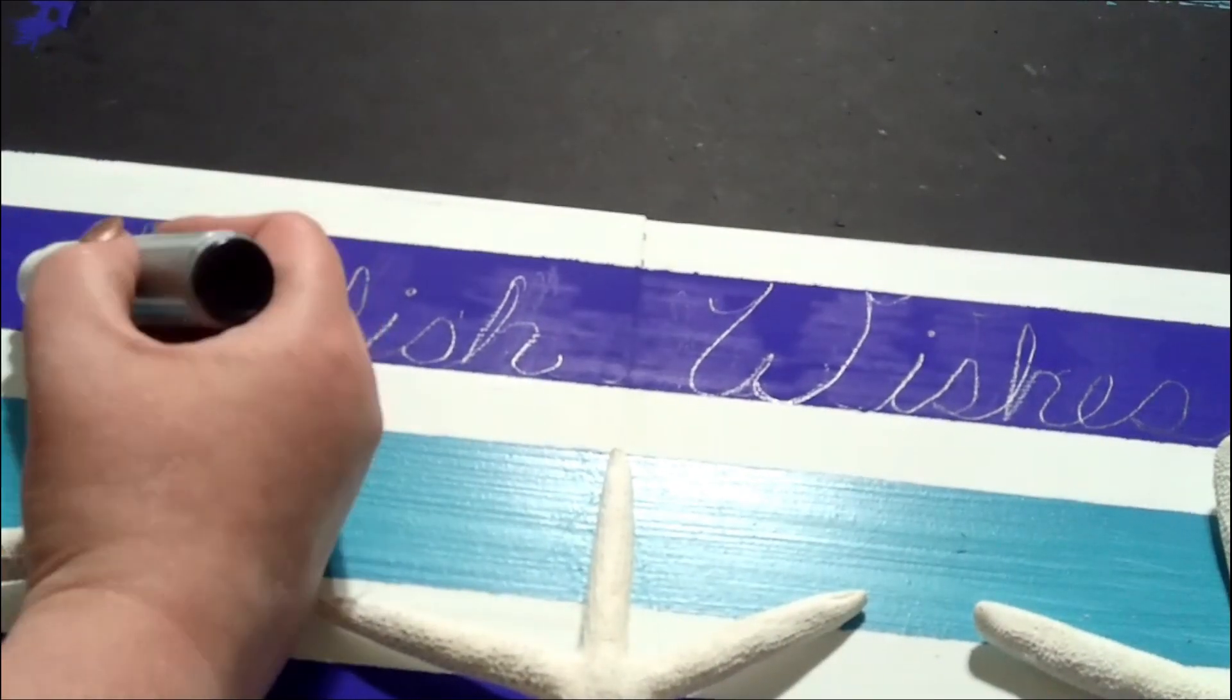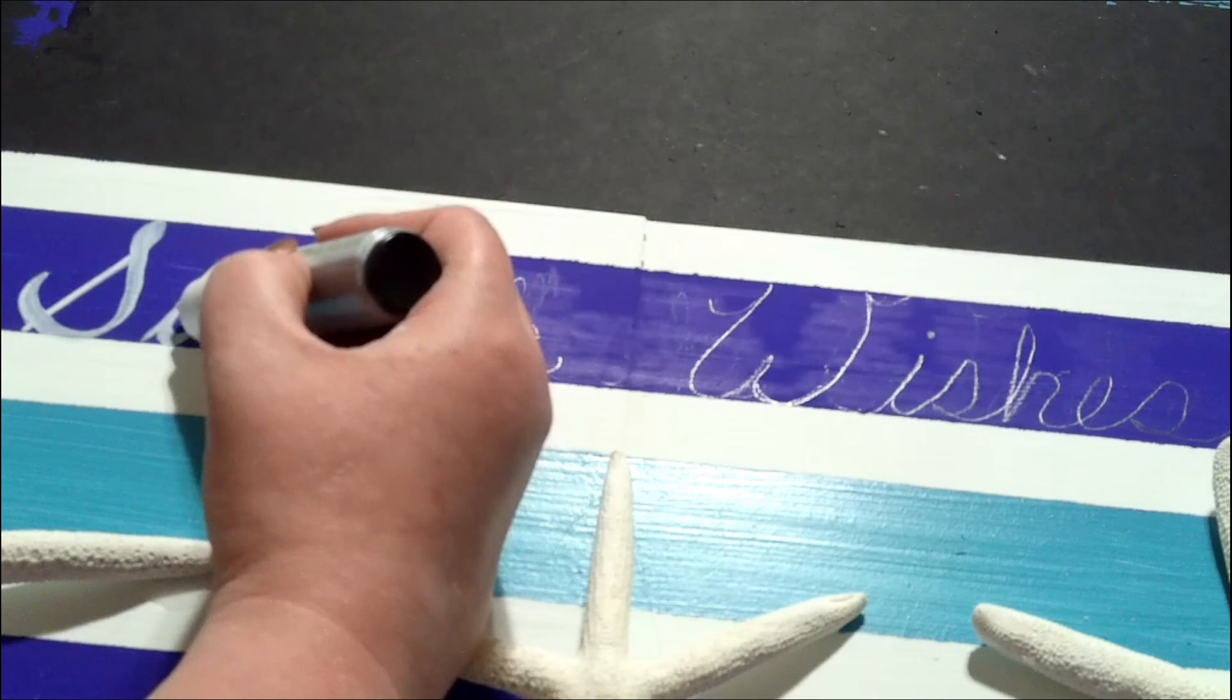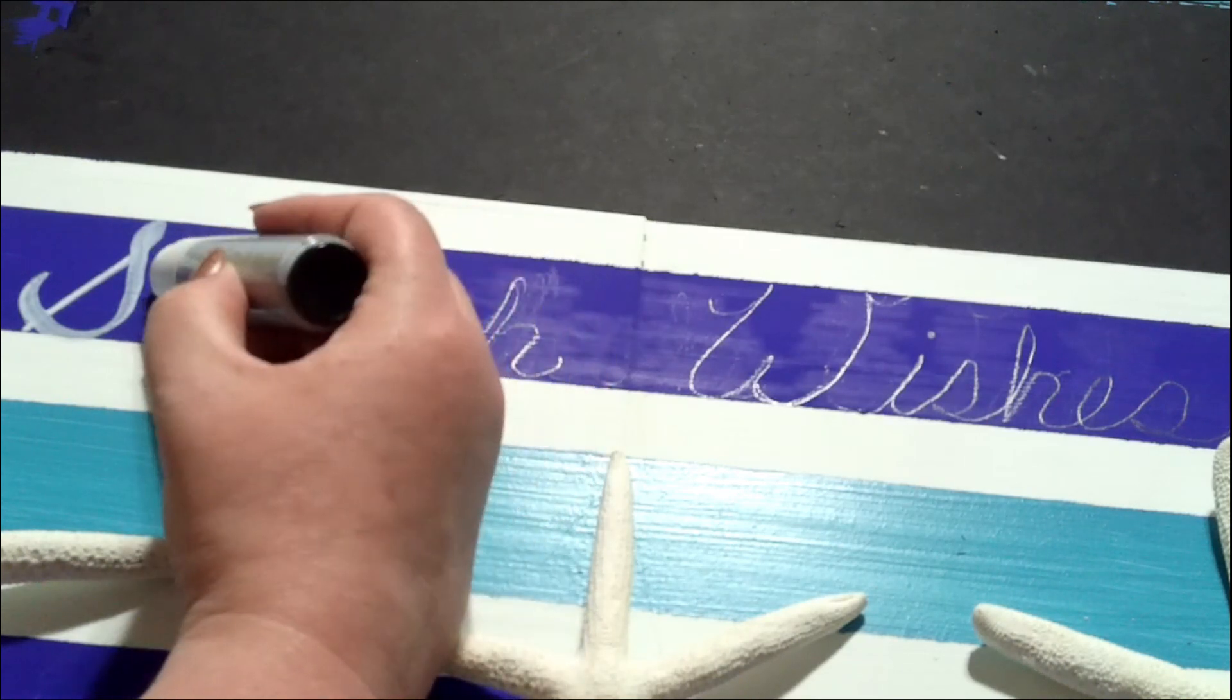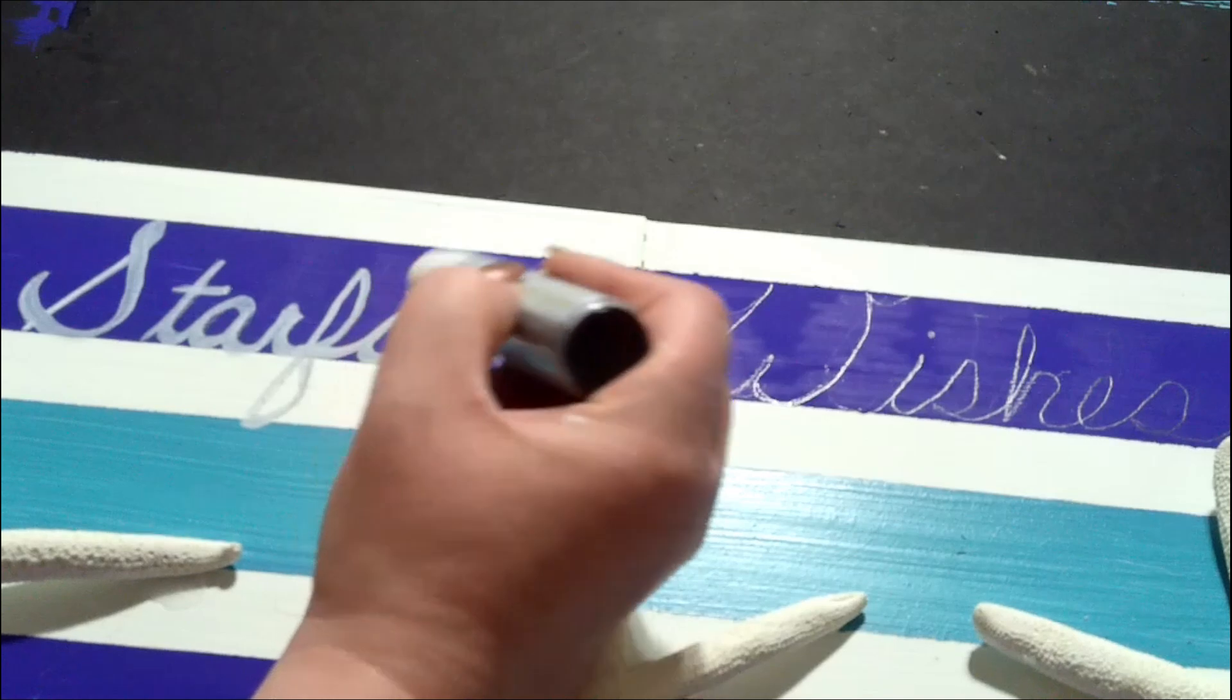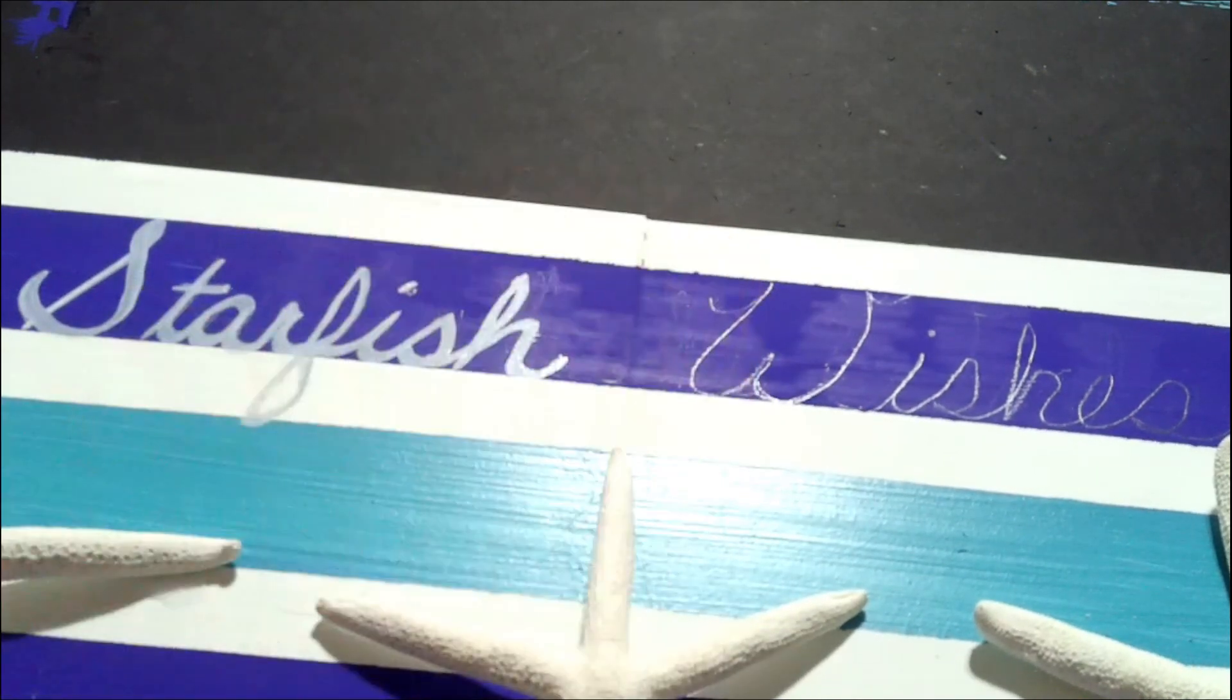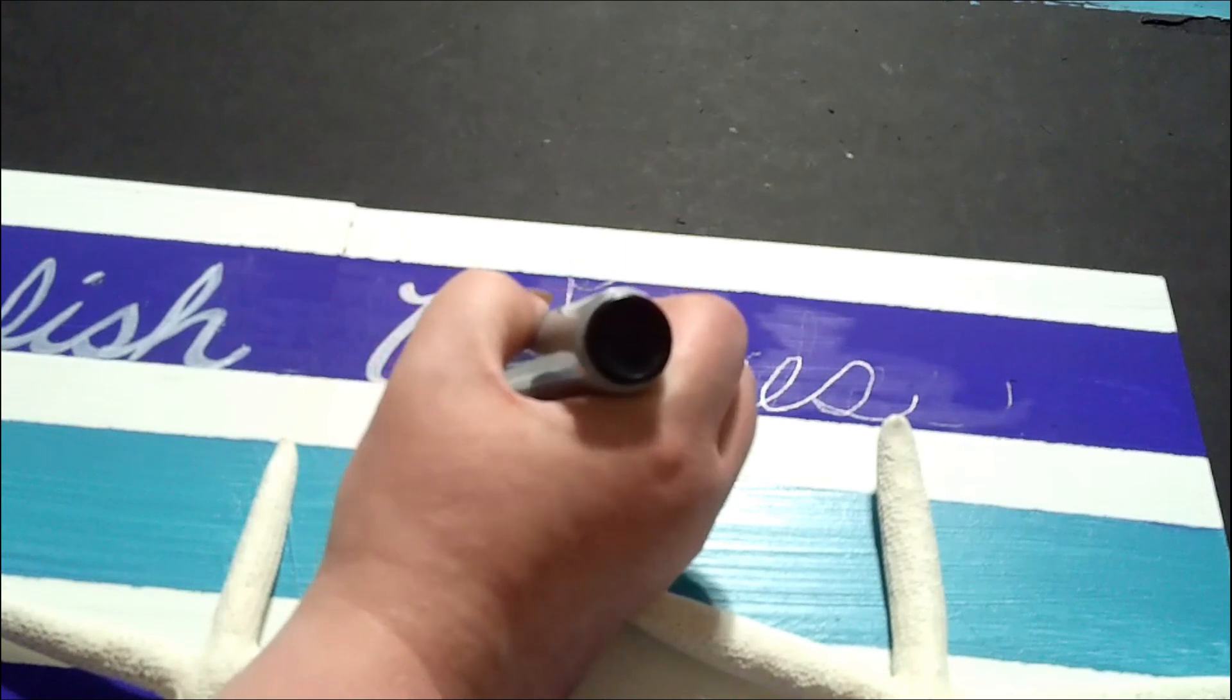All right. Lastly, for our last project, I decided to write the word starfish wishes on the top. Since I'm free handing it and my penmanship is never good, I took a very light shade of pencil on there and then I went over it with a white chalk pen marker that I have and it came out super good.